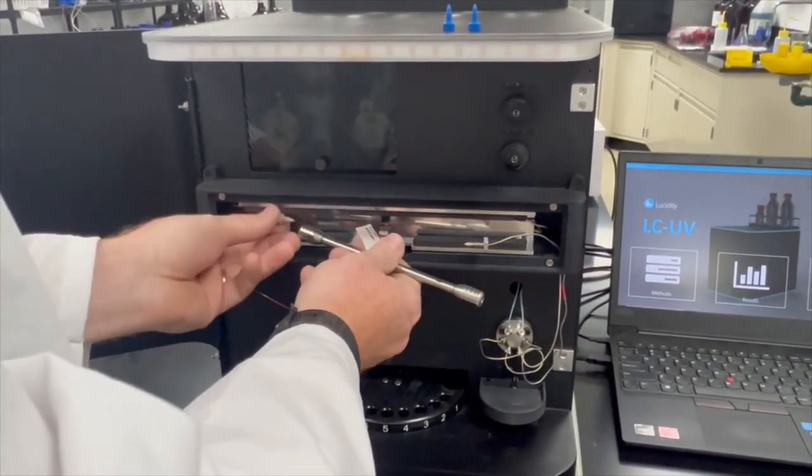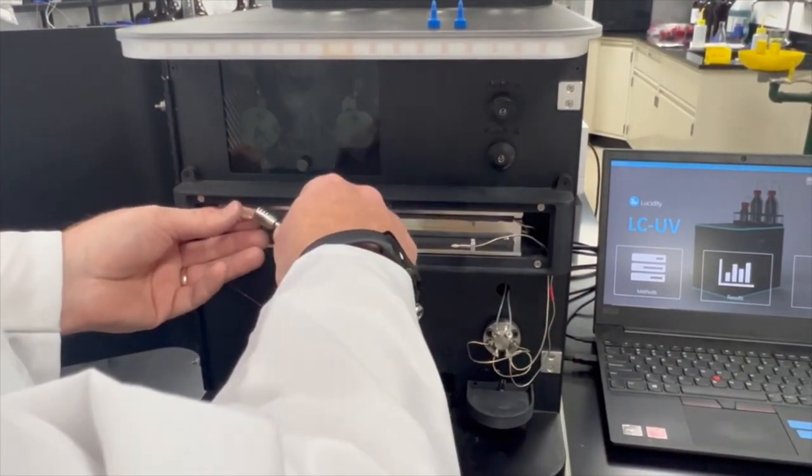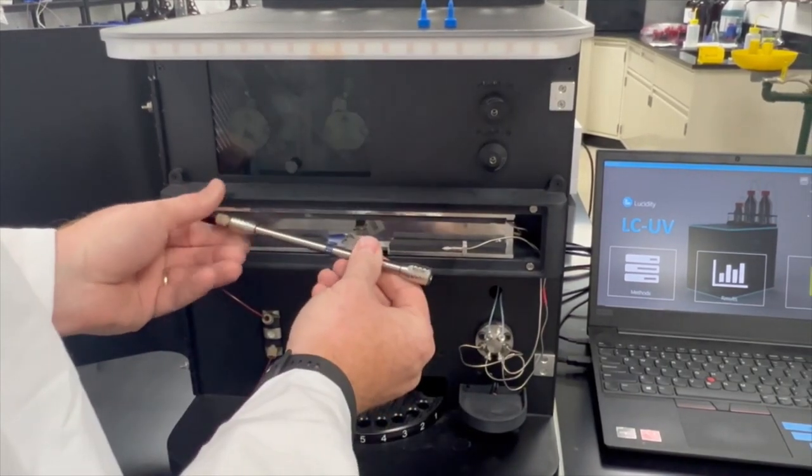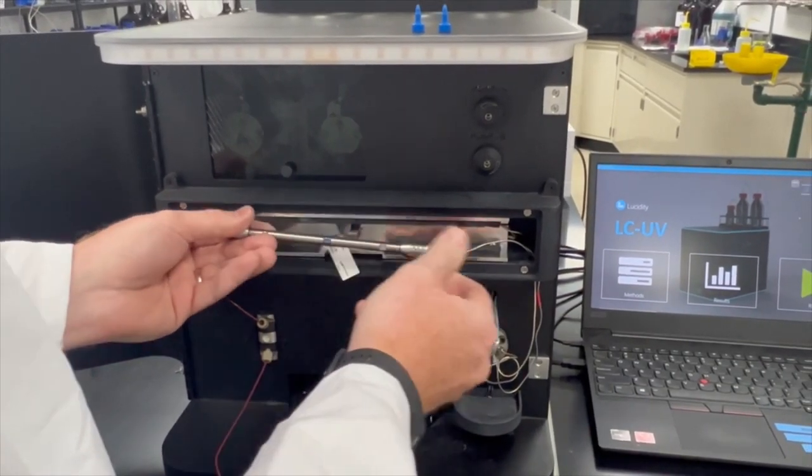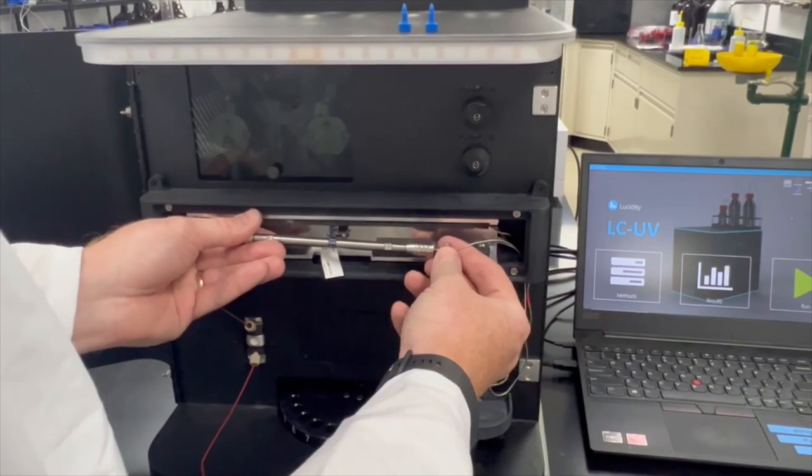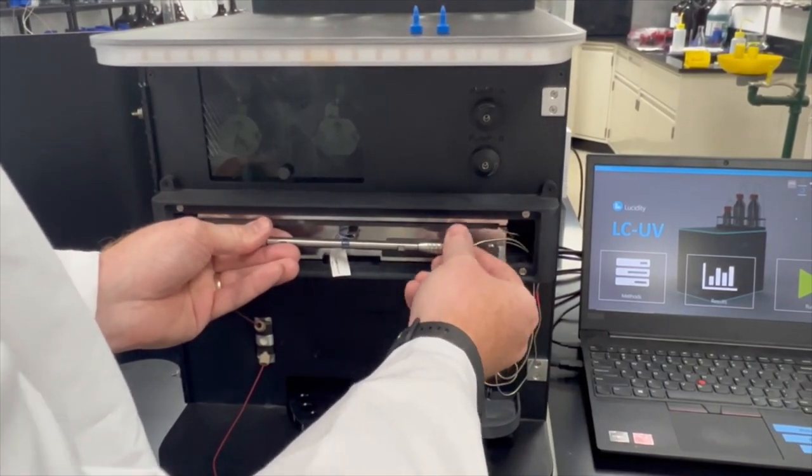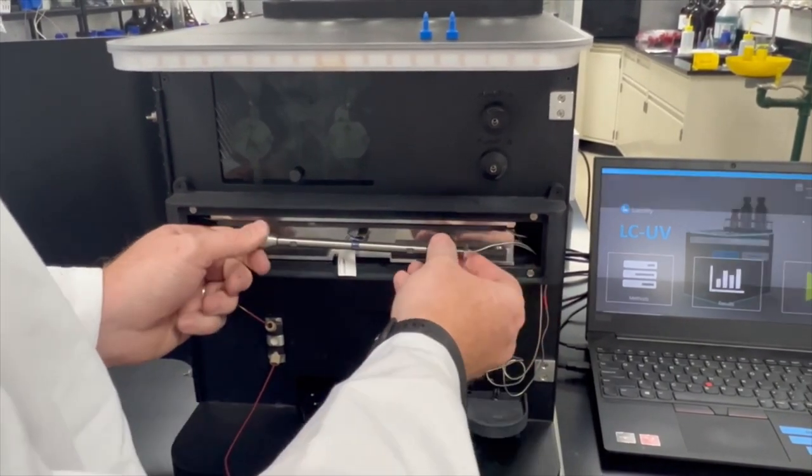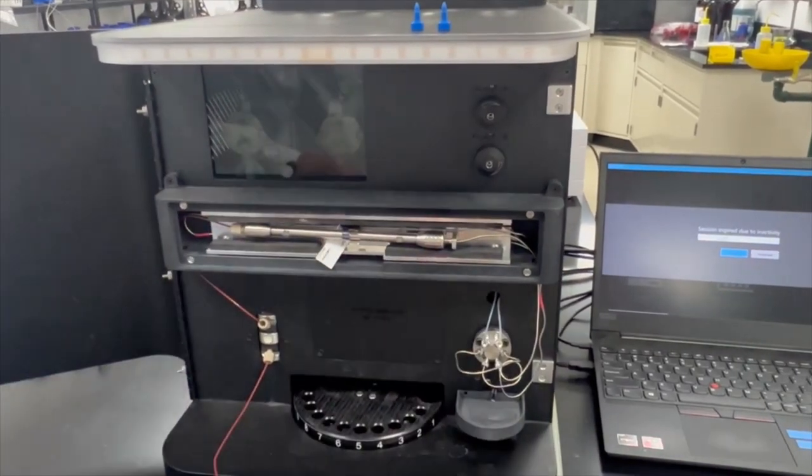We're going to connect the column, making sure the flow is going in the correct direction. We have finger tight fittings so you don't have to use a wrench if you don't want to, and then that clips right in place.